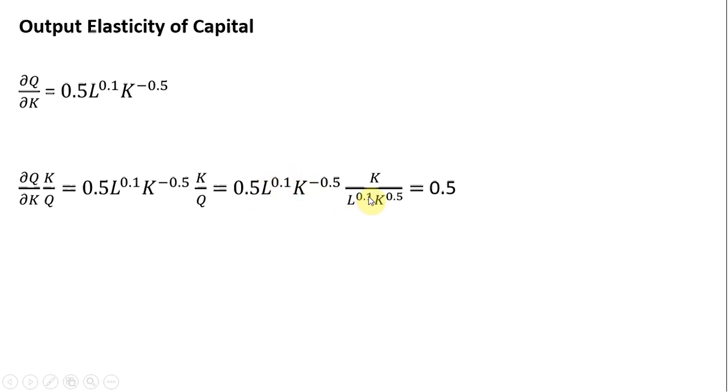L to the 0.1 divided by L to the 0.1 will cancel. K divided by K to the 0.5 will leave K to the 0.5 in the numerator. So K to the minus 0.5 times K to the 0.5 will cancel. Everything cancels but the 0.5, and that is the output elasticity of capital. A 1% increase in units of capital will increase output by roughly half a percent.